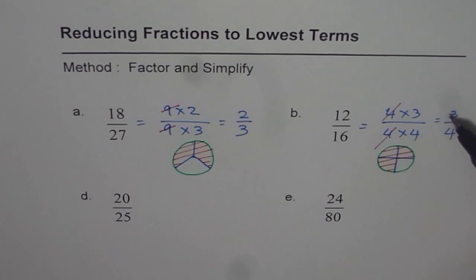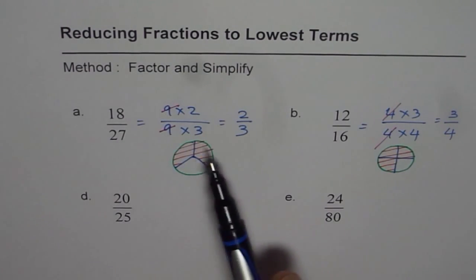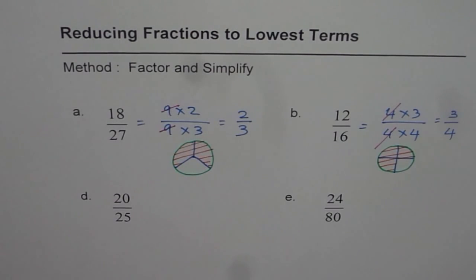When you write 12 over 16 as 3 out of 4, it makes more sense and is so easy to understand. That is all what we are trying to do here. It's fun reducing, dividing repeatedly, or canceling out the common factors. I hope you have understood the concept. Move on and do much more with fractions. Enjoy. Thank you.